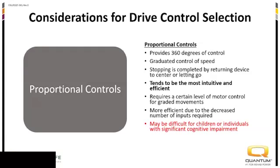Proportional controls do require a certain level of motor control, especially fine motor control. The proportionality requires graded movements to control speed — just a little bit of input when we need it versus a gross motor movement where you're either pushing it all the way or nothing. We also need to think about proportional controls for individuals who have not had previous proportional experience — it might not be the most intuitive, for example for children or individuals with acquired brain injury cognitive impairments.